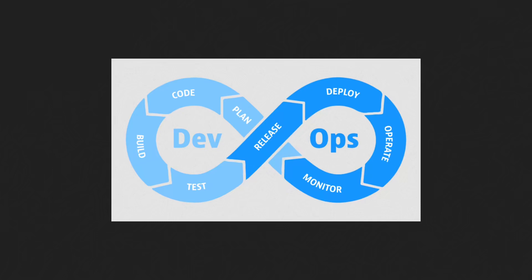Now let's talk about best practices for setting up a DevOps pipeline. First, use automated tools and processes as much as possible. Automation can really help streamline the development and deployment process, reducing the risk of errors and improving efficiency. This could include automating tasks such as building and testing code, deploying code to production, and monitoring the application. Second, keep the pipeline simple and focused on delivering value to end users — a simple pipeline is easier to understand and maintain, helping reduce errors and improve efficiency.